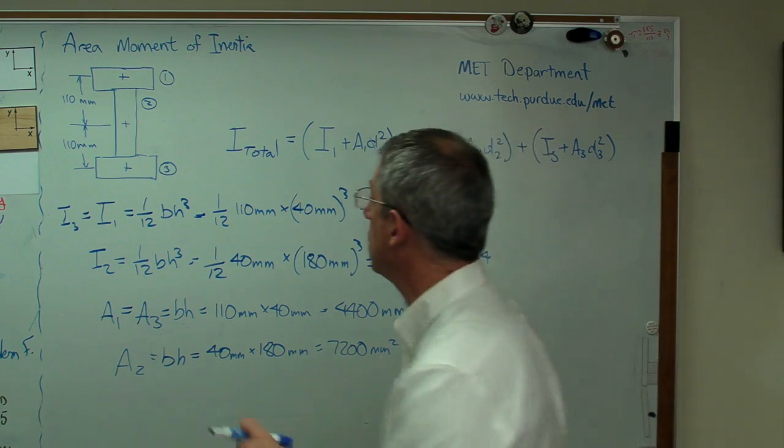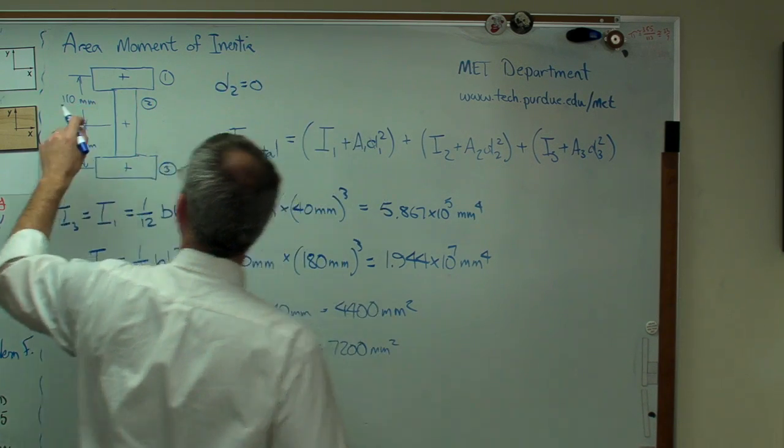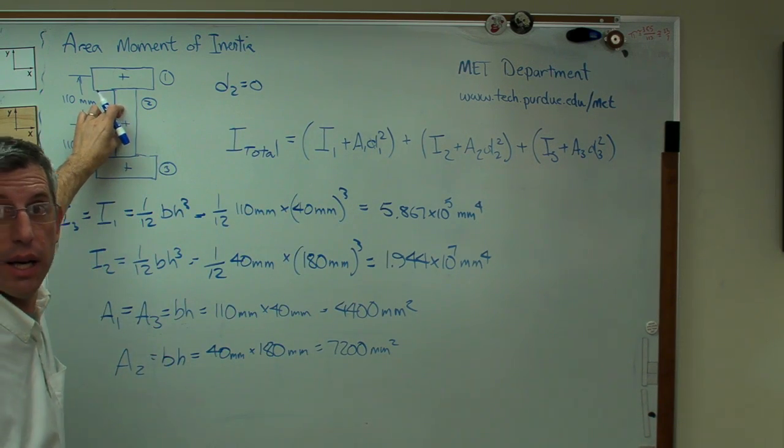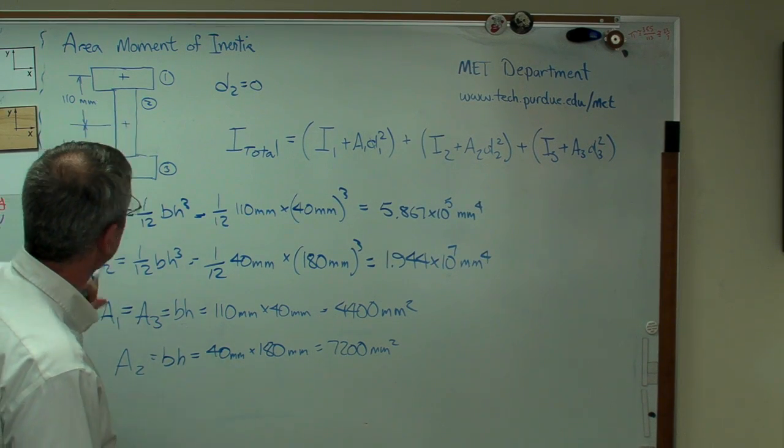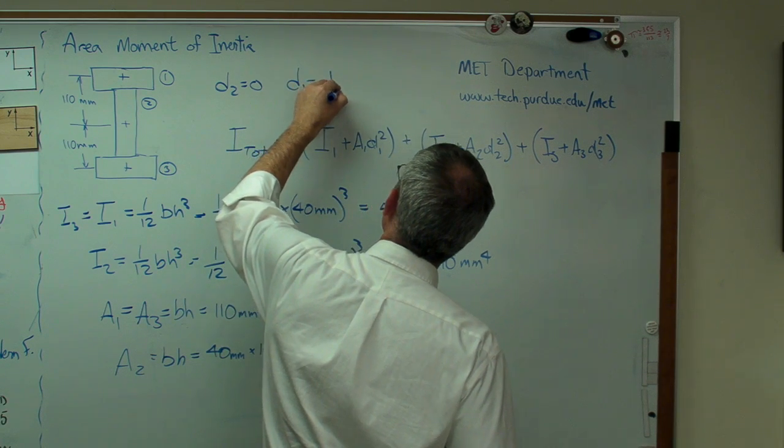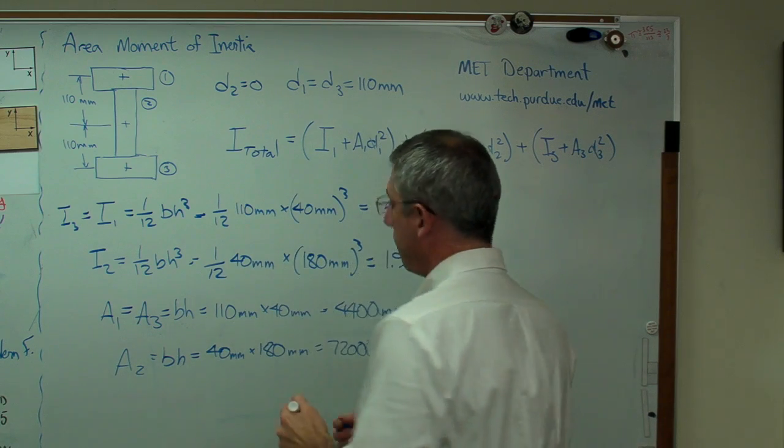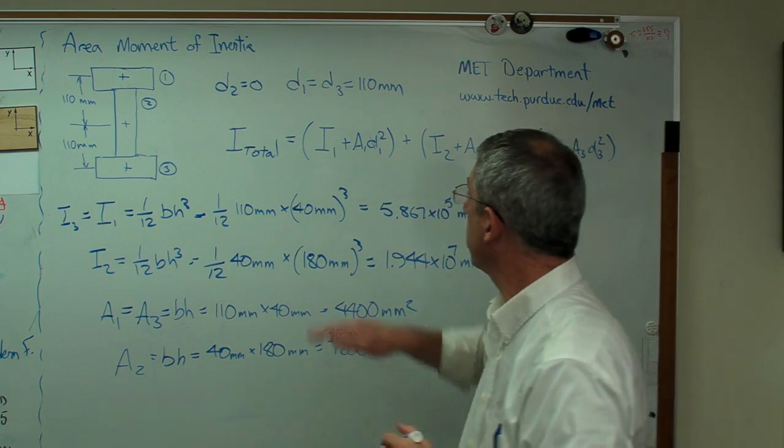Last thing we need to know is D. D2 equals zero because the centroid of that box is the same as the centroid of the entire shape. D1 equals D3 equals 110 millimeters. So we're going to go through this whole calculation now.